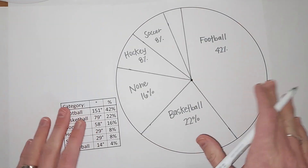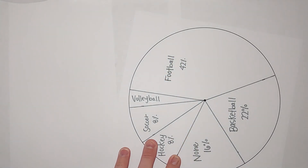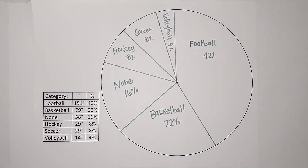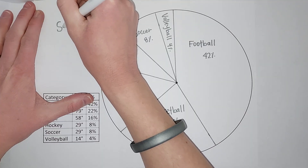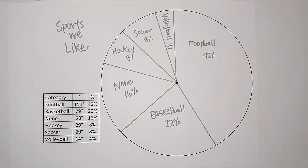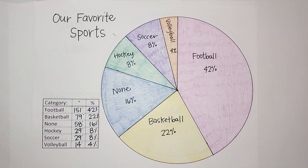Volleyball — how am I going to fit that label in there? Volleyball got the smallest slice even though it has the longest name — that was 4%. There is our graph! Now there are two other things we need to do: a title. Titles are pretty important for graphs, so I'm going to call this 'Sports We Like.' And then we get to color it — I won't make you watch me color, but here it is all done. Look how pretty that is! I hope this made sense and that you can make a circle graph or pie chart. Good luck, bye!